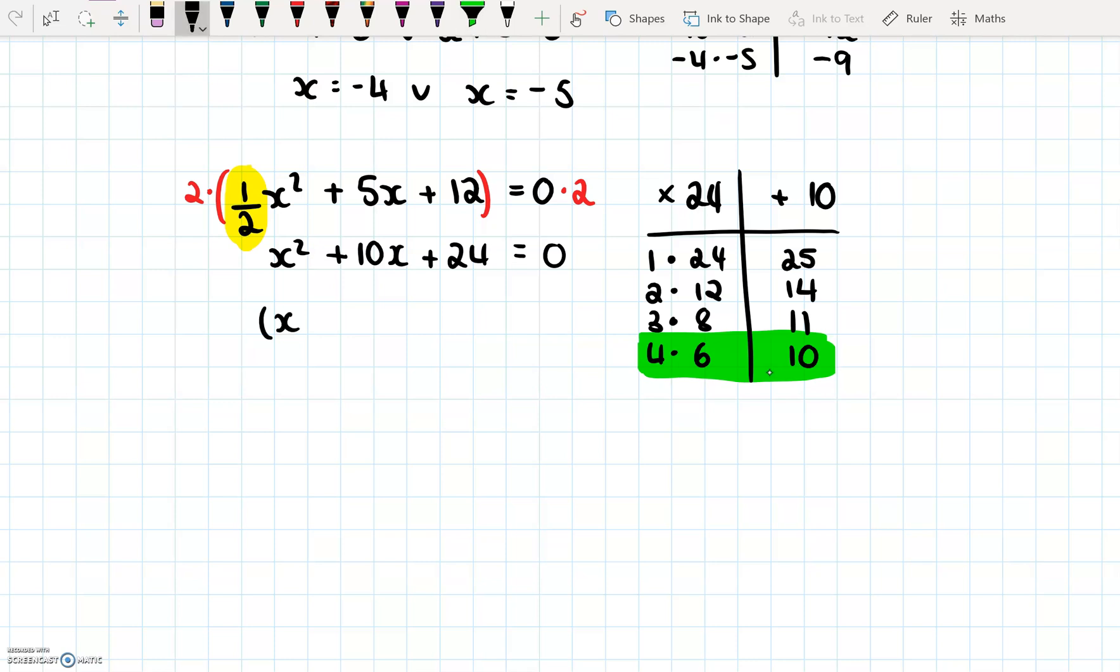So we're going to say (x + 4)(x + 6) = 0. And in that case, we now have x + 4 = 0, or x + 6 = 0. So x = -4, or x = -6.